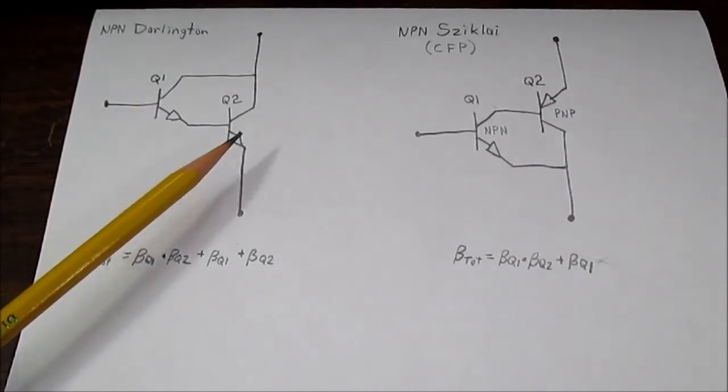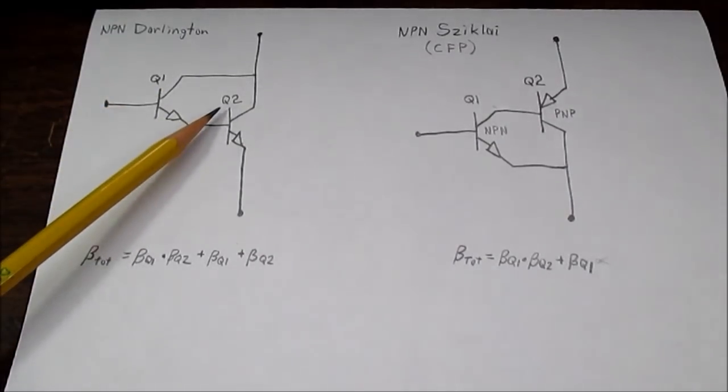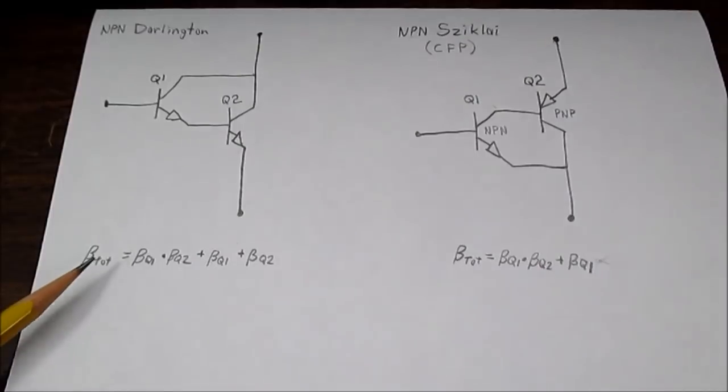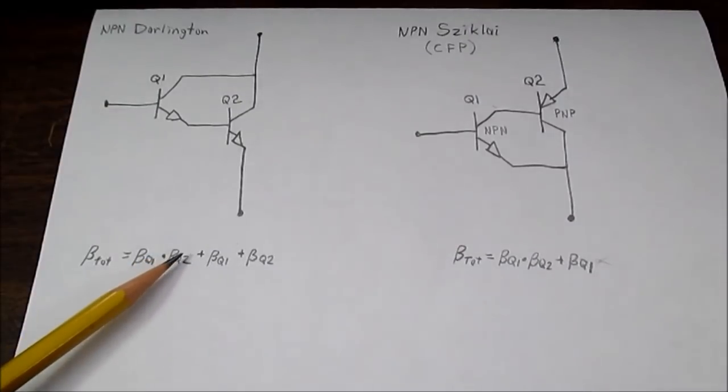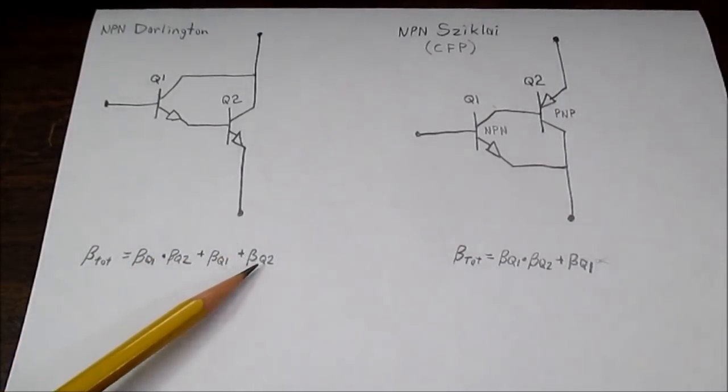And the current gain is not really straightforward. I have the transistors labeled Q1 and Q2, and the total beta of the Darlington circuit is the beta of Q1 times the beta of Q2 plus the beta of Q1 plus the beta of Q2.